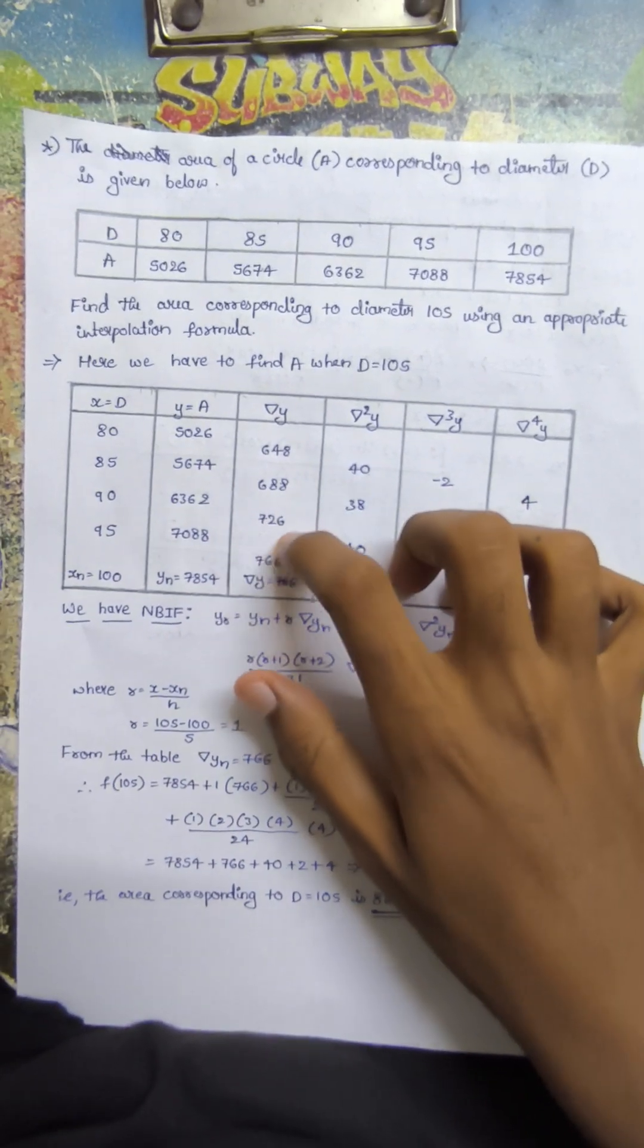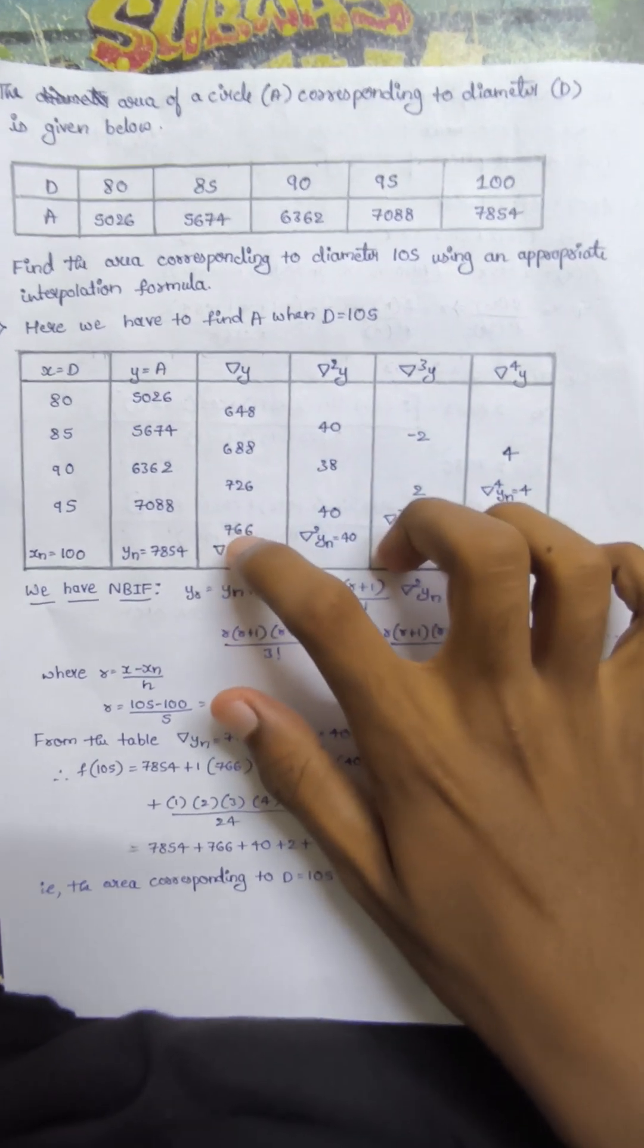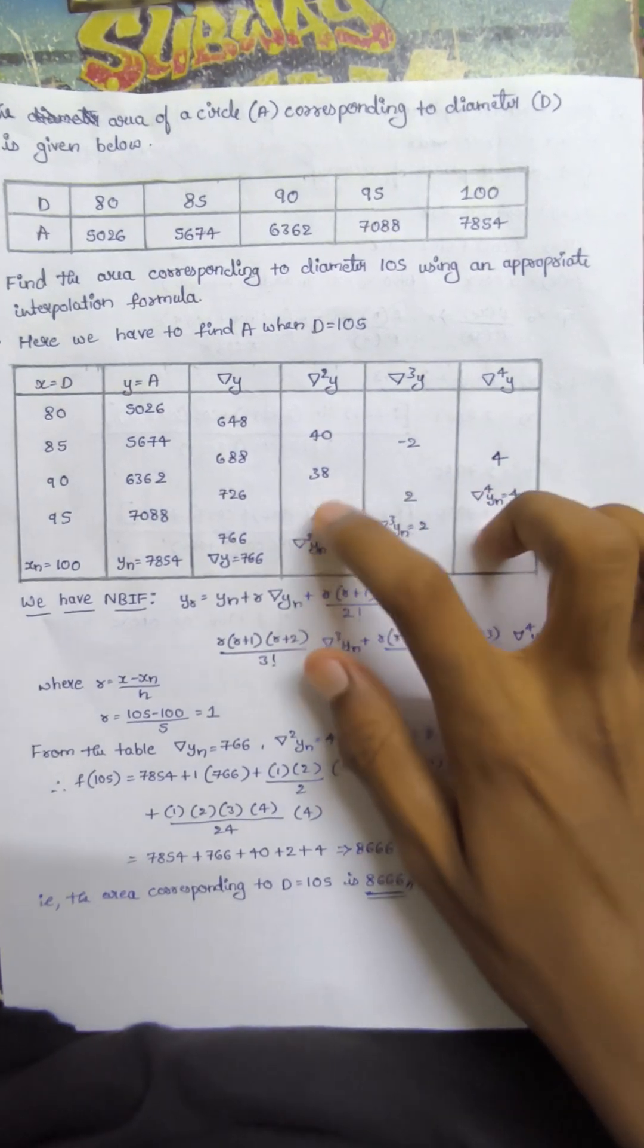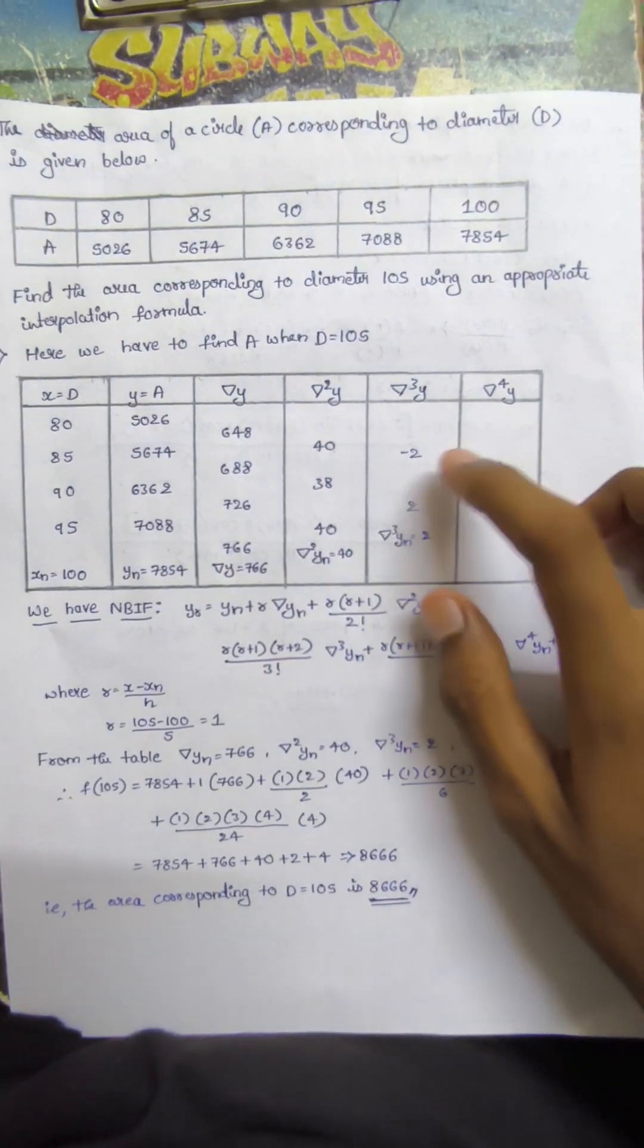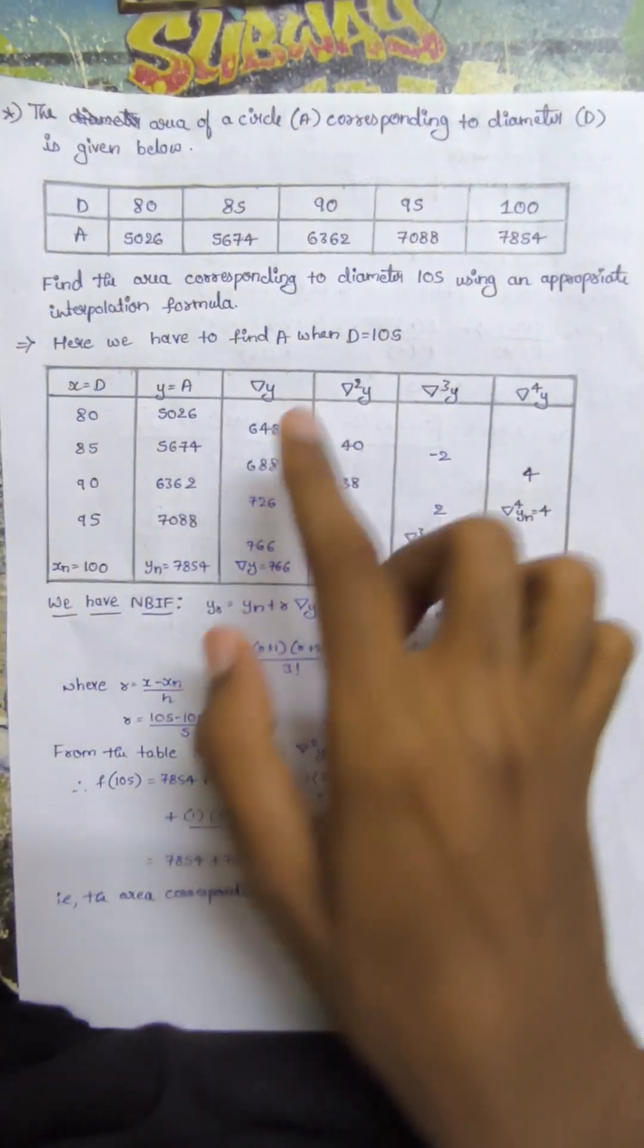Third differences: 38 minus 40 is minus 2, 40 minus 38 is 2. Fourth difference: 2 minus minus 2 is 4. Therefore, we need all these values in the formula.